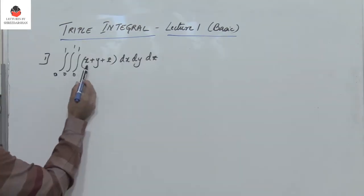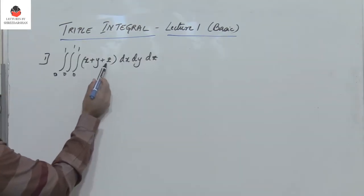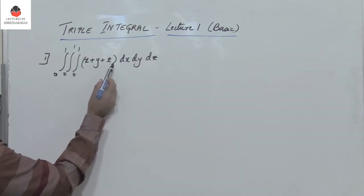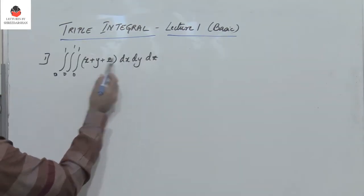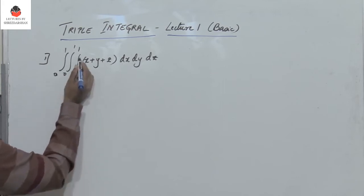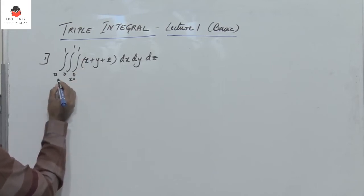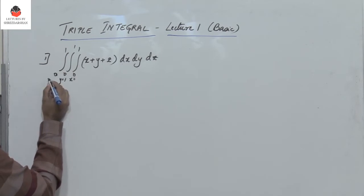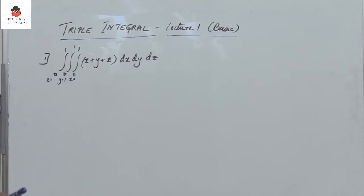Problem 1: Triple integral of (x + y + z) dx dy dz, where x varies from 0 to 1, y also varies from 0 to 1, and z also varies from 0 to 1.